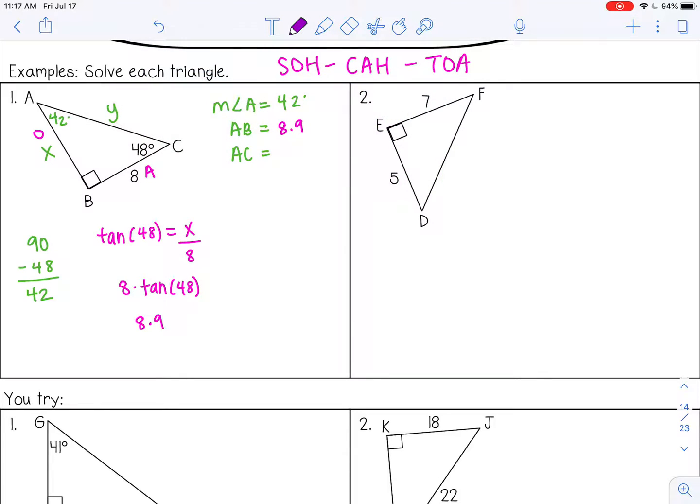And then I'm going to use another color to solve for AC, which is y. So I'm still going to use 48. Y is actually the hypotenuse and I'm going to use adjacent again. So adjacent and hypotenuse, that would be cosine. Adjacent over hypotenuse. So y is in the denominator, so I'm going to divide. So 8 divided by cosine of 48, 11.95, so that would round to about 12.